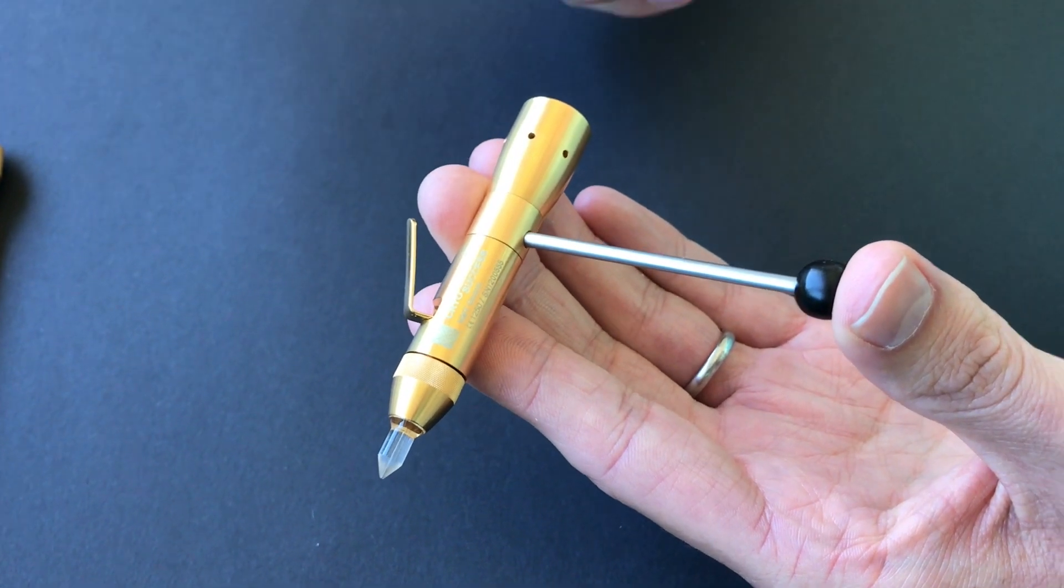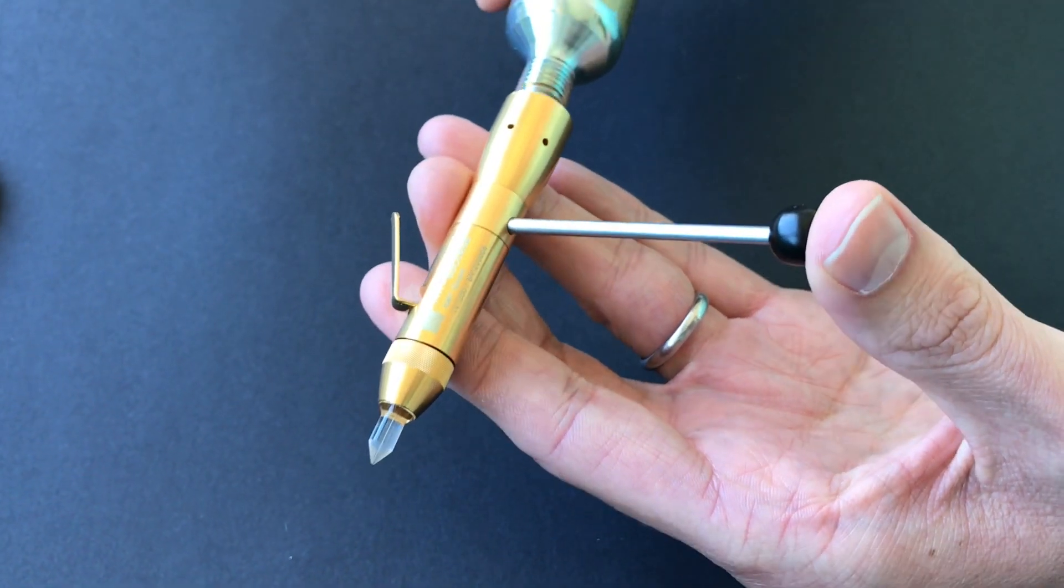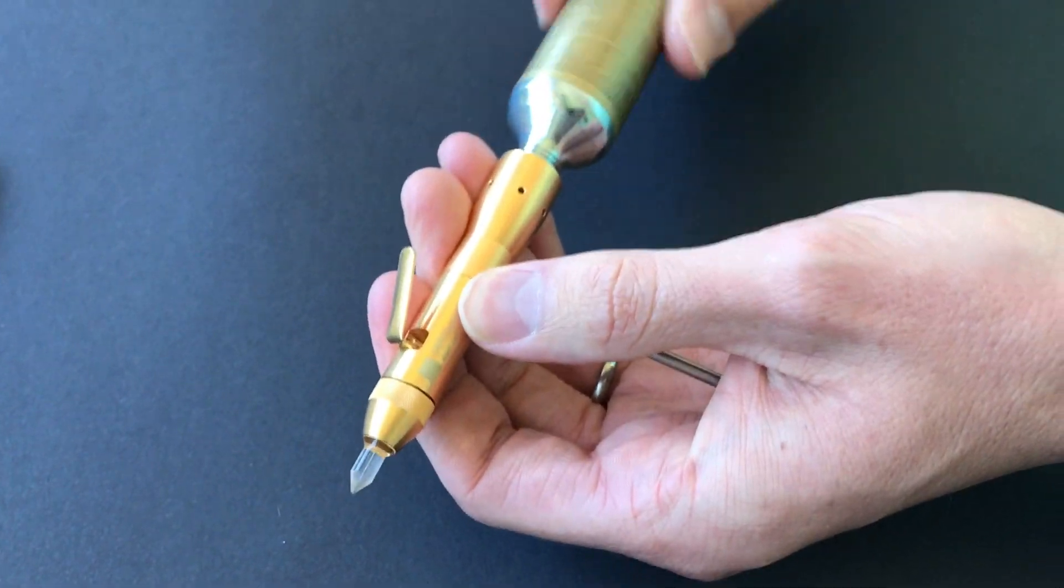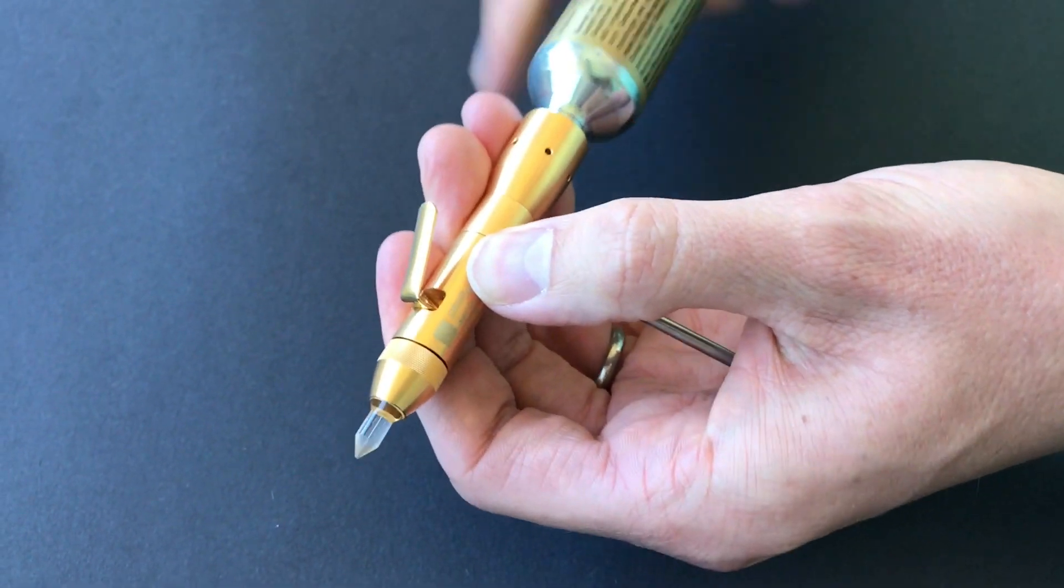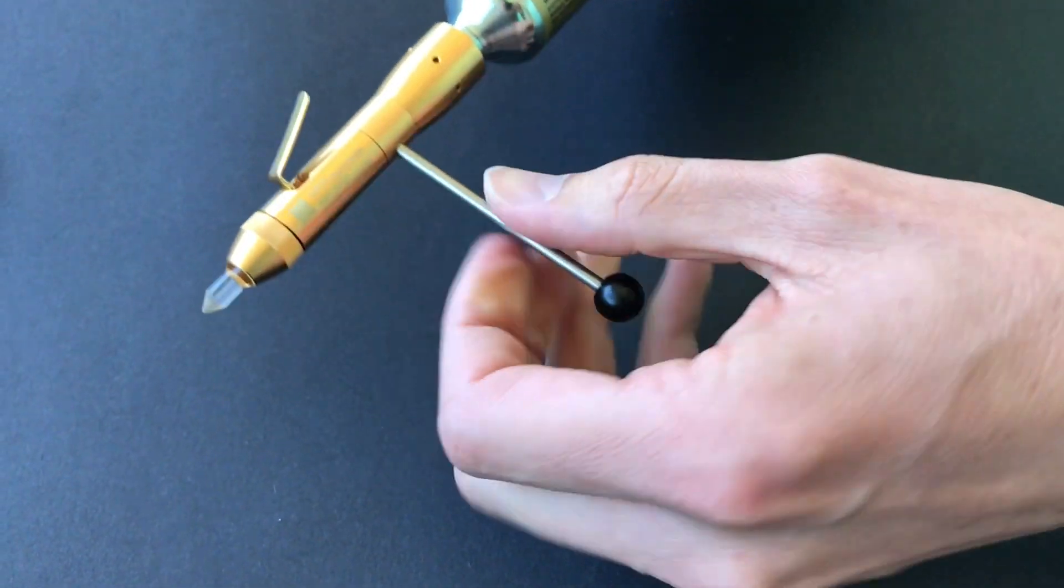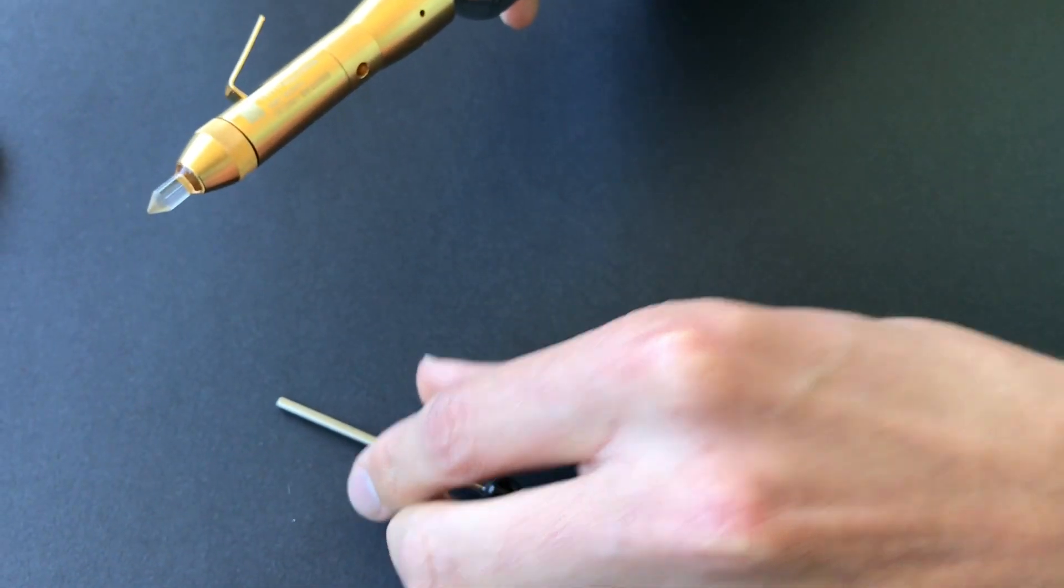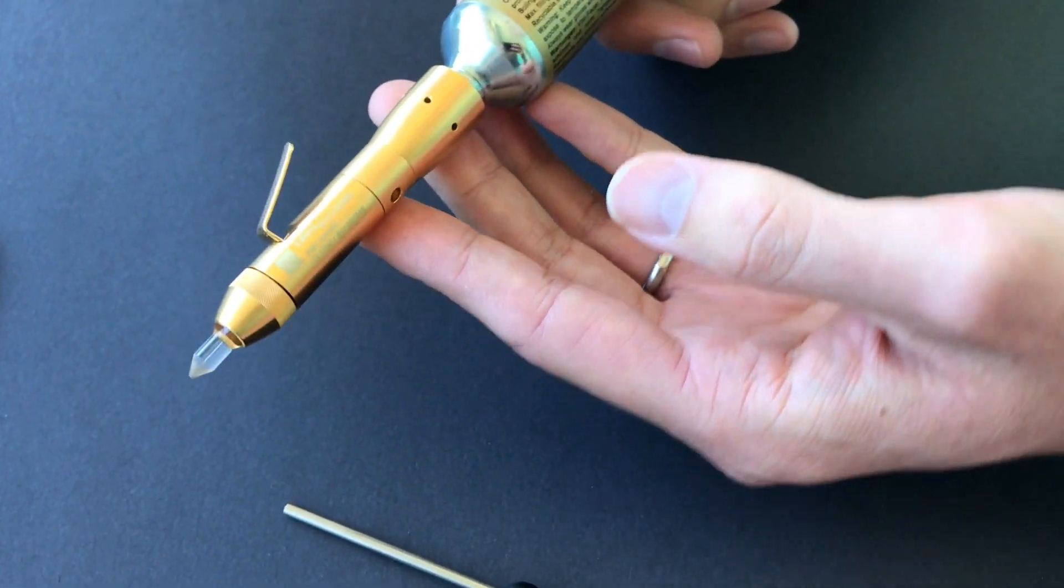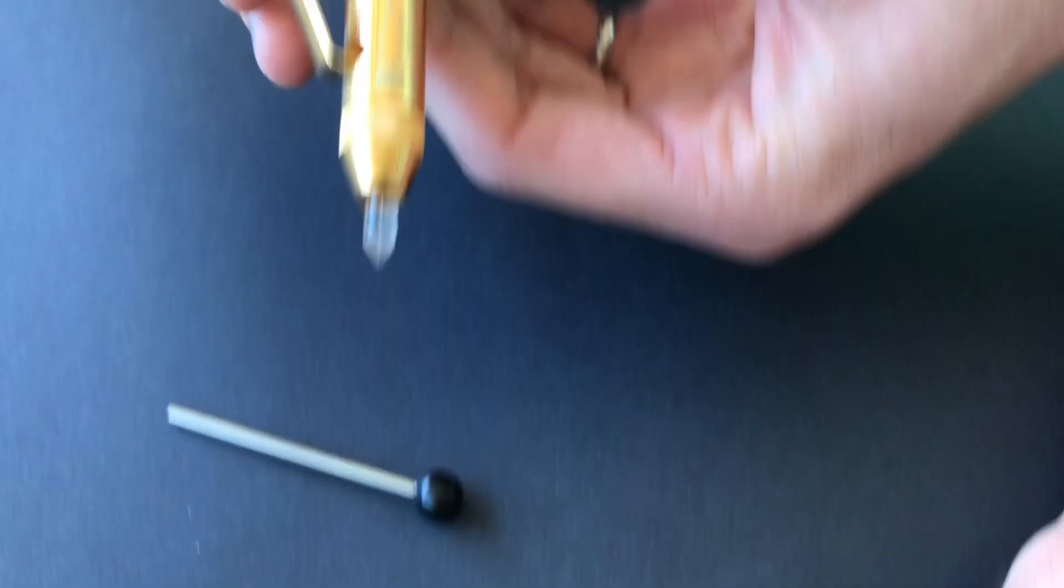With firm pressure, twist the cryotherapy cylinder in until you can't twist any further. Then remove the metal pin, and now the unit is ready to be used for treatment of a lesion.